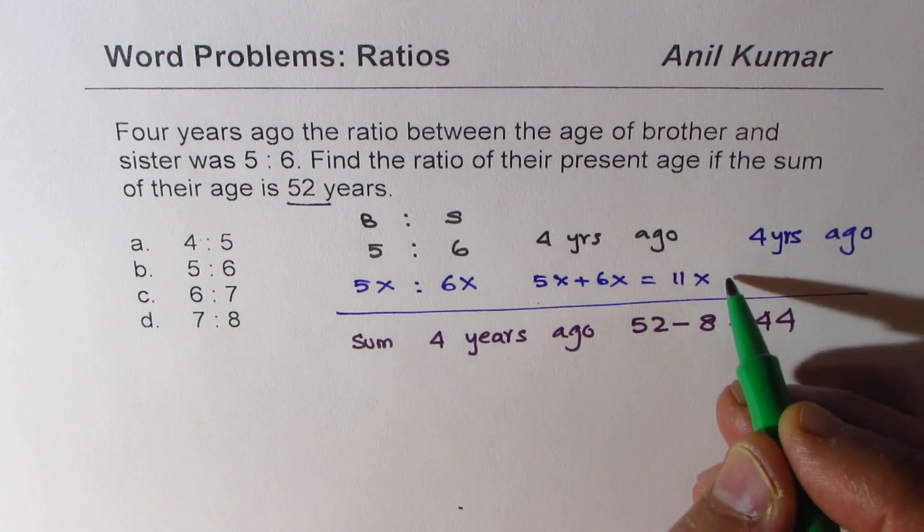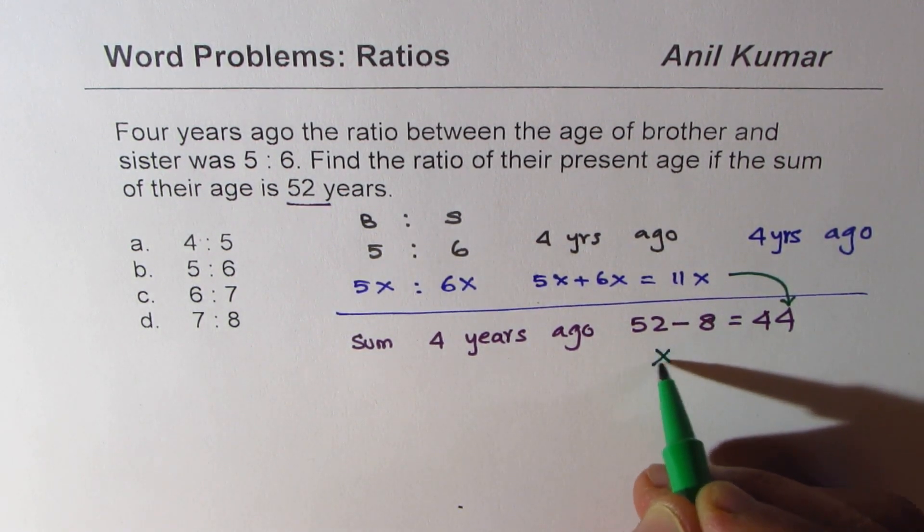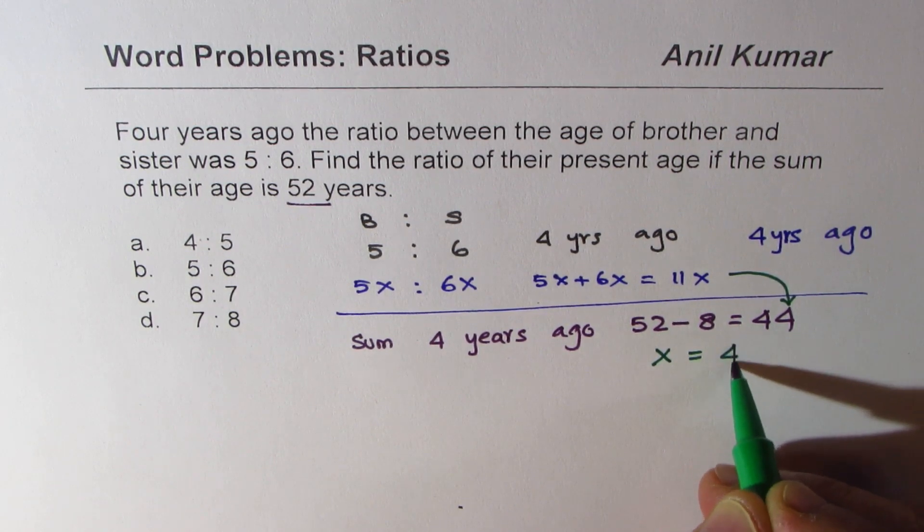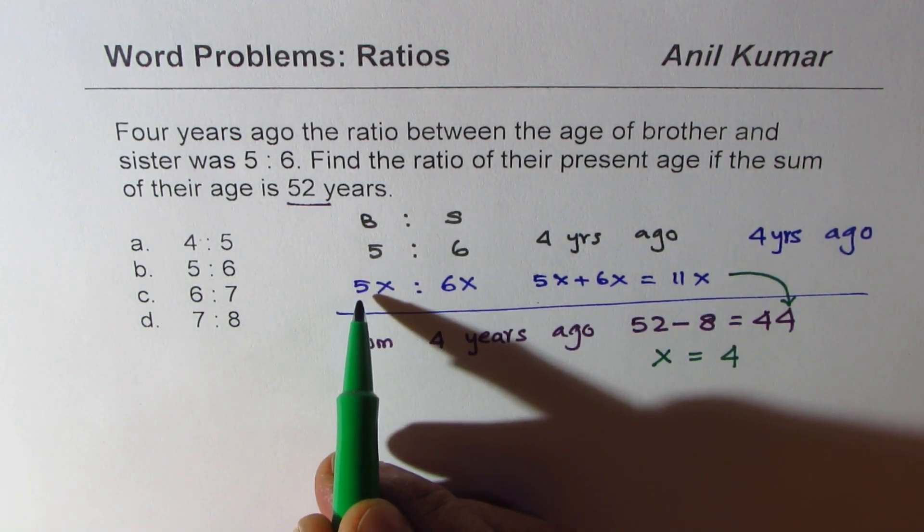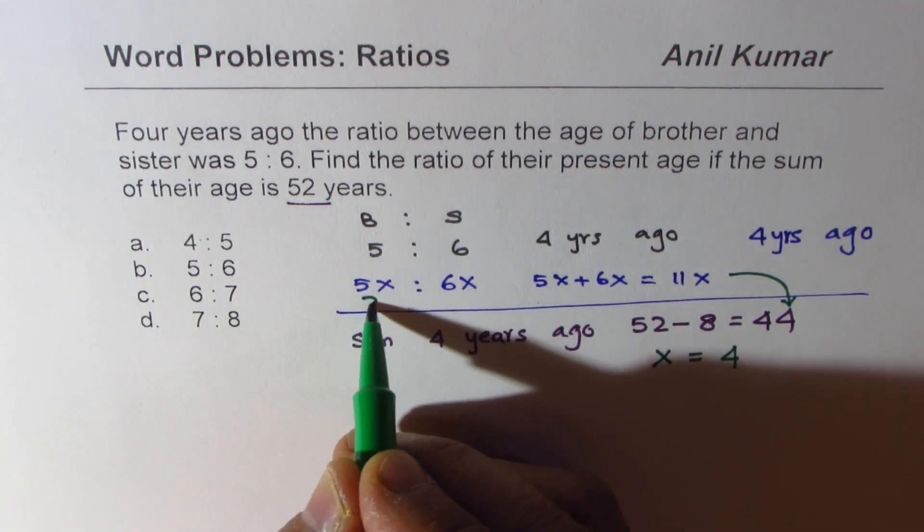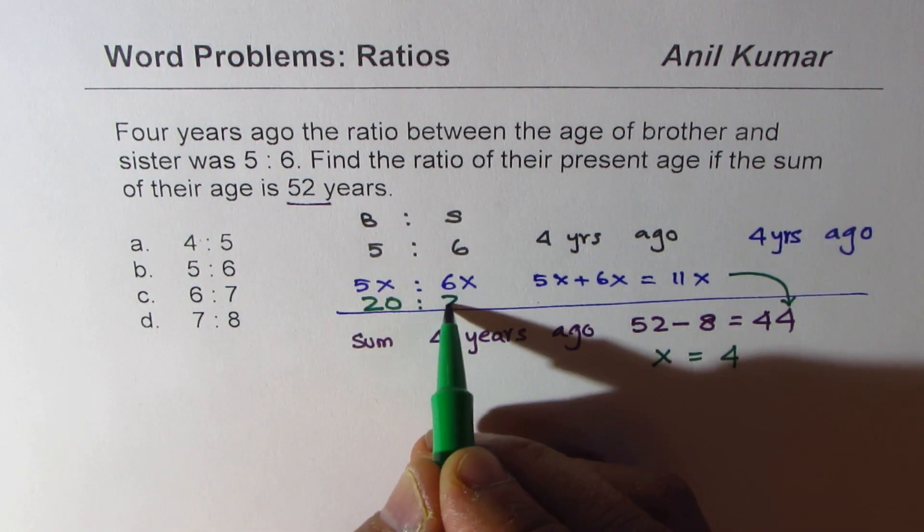Now if you compare these two, 11x and 44, you clearly know x is equal to 4. Correct? And therefore we get the ages here as 4 times 5 as 20 and 4 times 6 as 24.